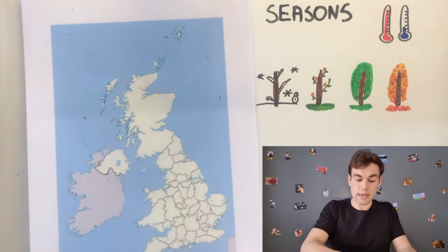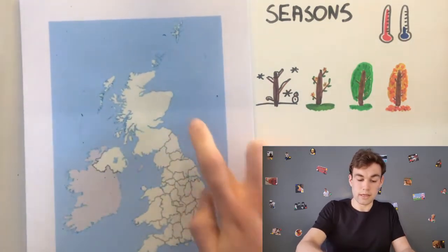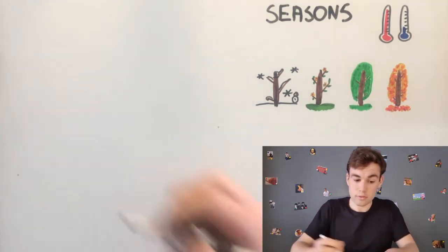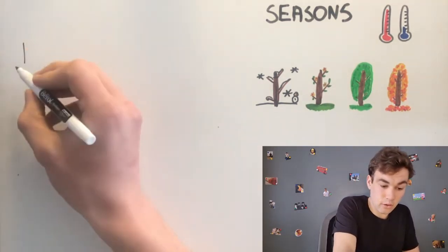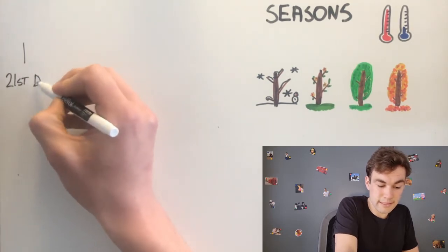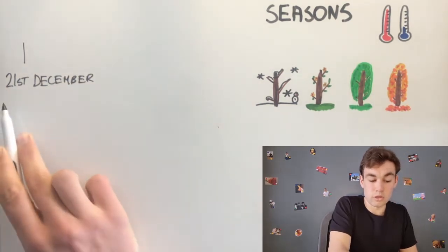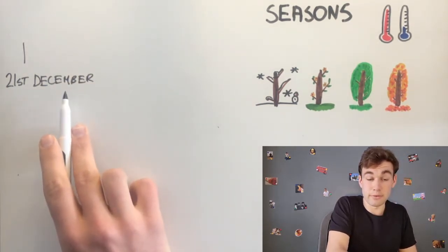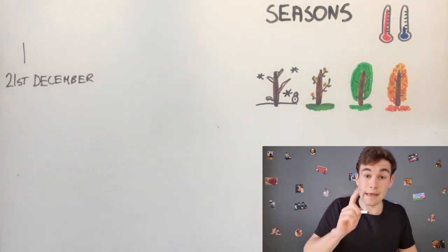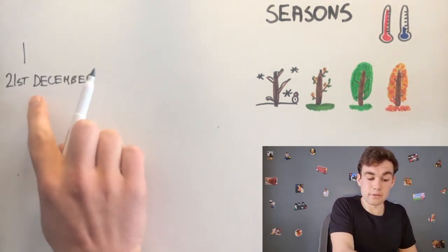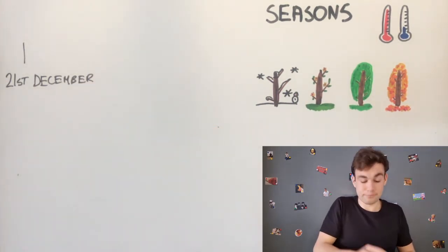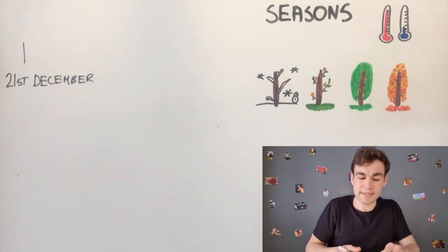In the UK, winter begins on the 21st of December. The 21st of December is when winter begins and the 21st of December is the shortest day.